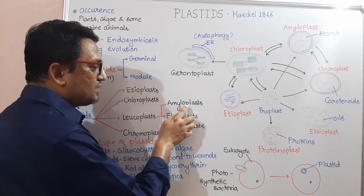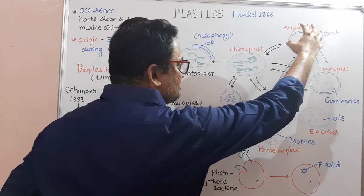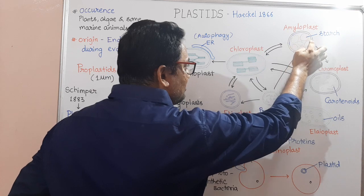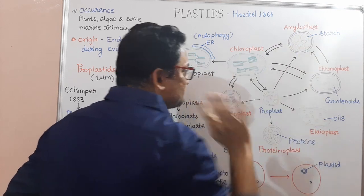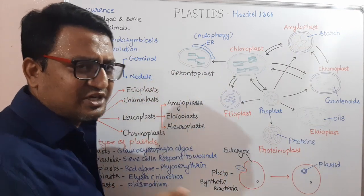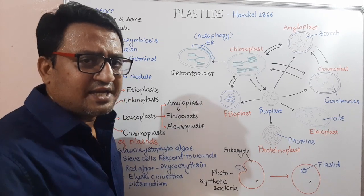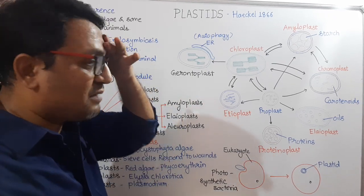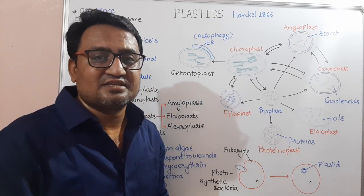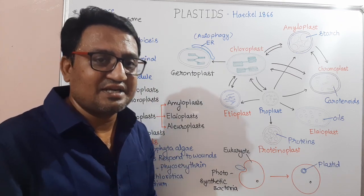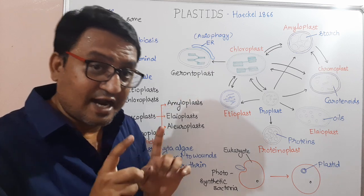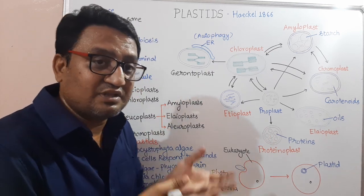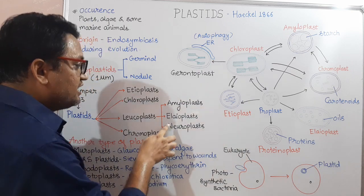Amyloplasts are double membranous Plastids which store starch. They are present in potato, rice, wheat, etc. The second function of Amyloplasts is acting as a Gravity Sensor — in the root, they act as a gravity sensor. And the third function is Nitrogen Fixation; in some plants, Amyloplasts are concerned with nitrogen fixation.